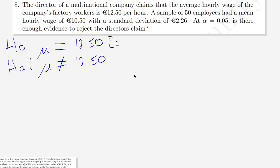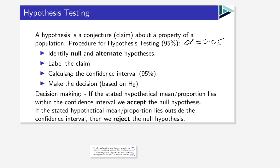The claim is that the null hypothesis — the average wage equals €12.50. It is important to do this because the claim will not always be the null. Some people make the common mistake of assuming the claim will always be the null — not necessarily. Sometimes the claim will actually be the alternate, and we will look at examples of that later.